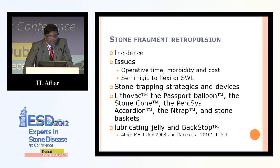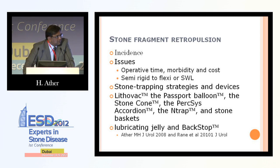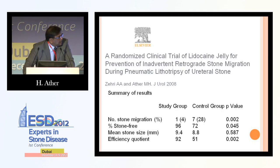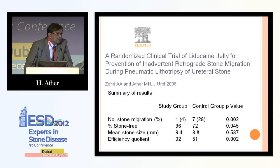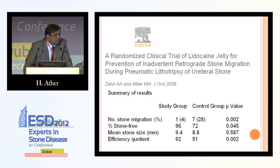There are various stone-trapping strategies and devices. More recently, we described a cheap alternative backstop using lubricating gel — injecting it just proximal to the ureteral stone. This was a randomized controlled trial reported in the Journal of Urology about four years ago, showing a significant difference in stone retropulsion rate and subsequently stone-free rate in the study group. It only involves putting 1 to 2 ml of KY gel just proximal to the stone using a 5 French open-ended catheter or through the working channel.